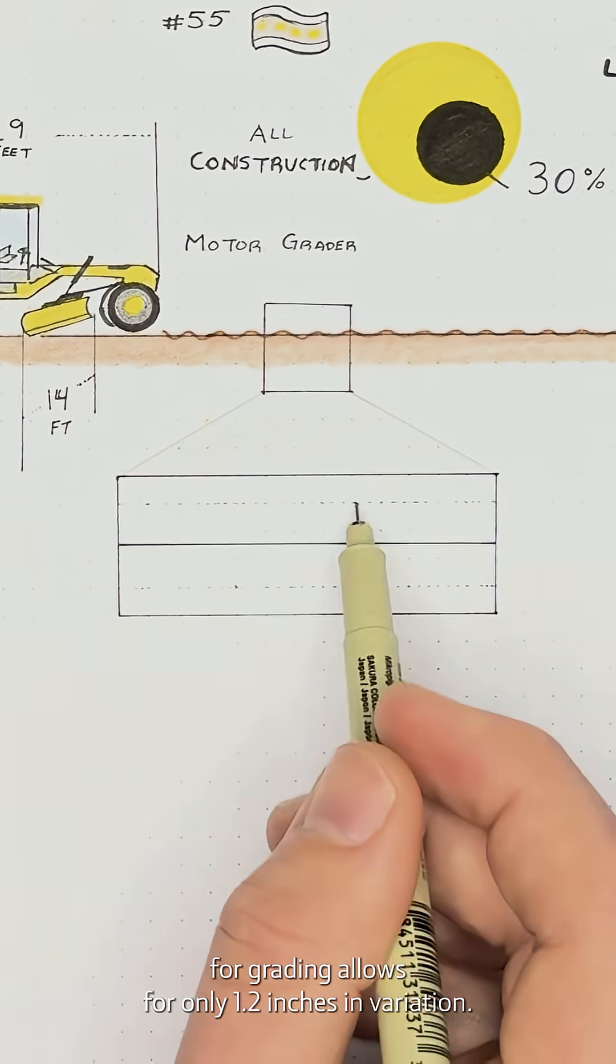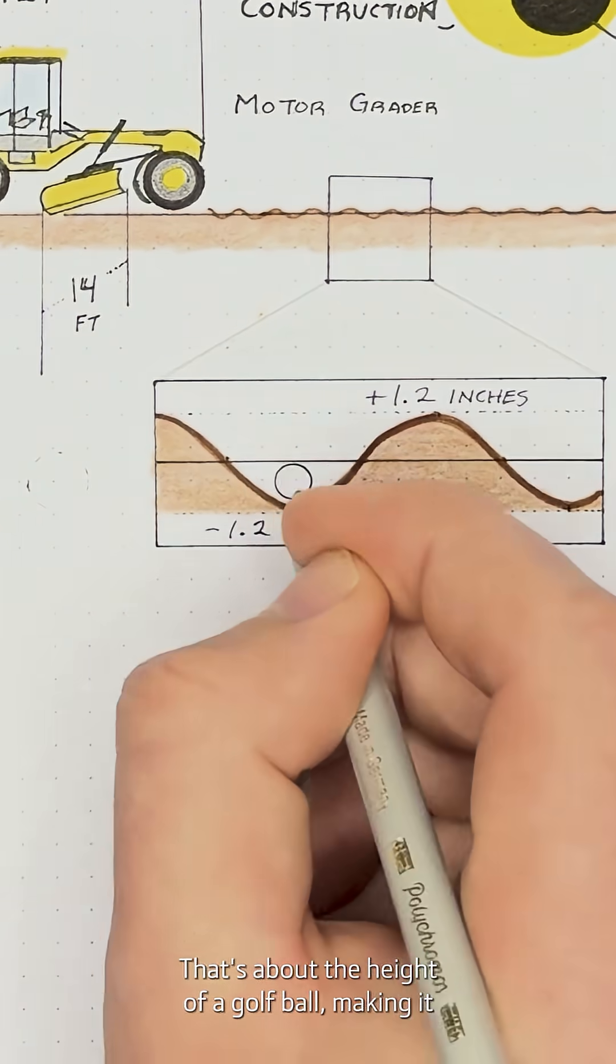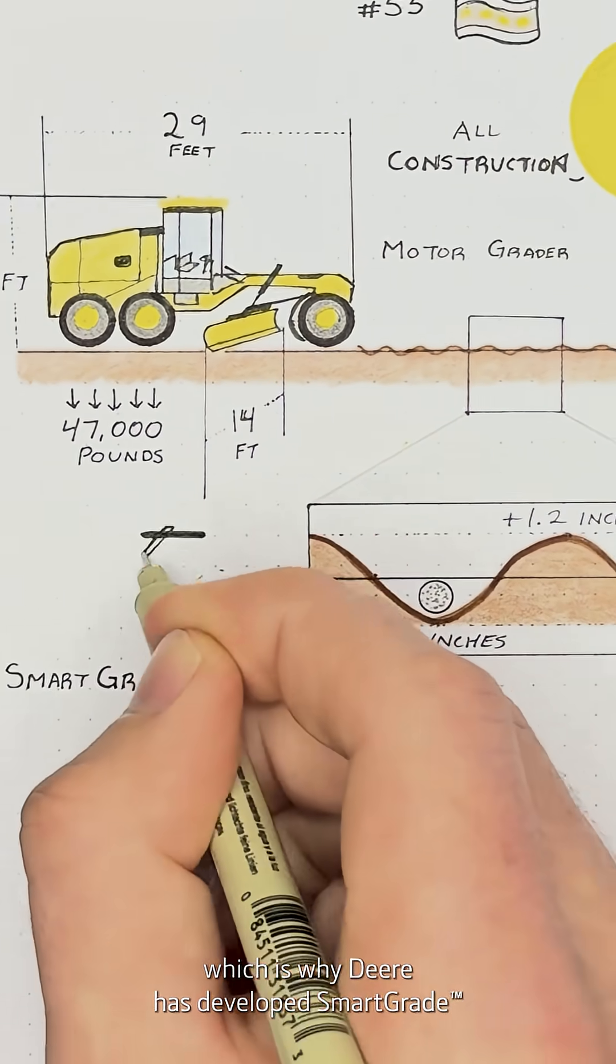You see, industry's standard tolerance for grading allows for only 1.2 inches in variation. That's about the height of a golf ball, making it extremely challenging for operators to nail it the first time. Which is why Deere has developed SmartGrade.